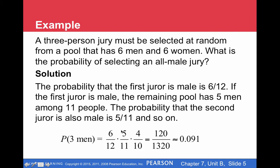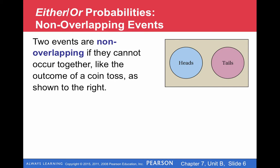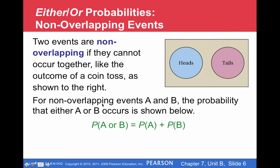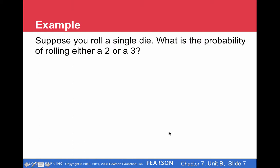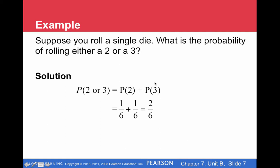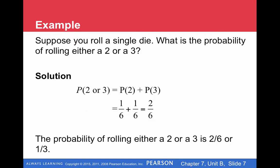Then we have either/or probabilities. With either/or, you have two possibilities: the events could be non-overlapping or they can be overlapping. Two events are non-overlapping if they cannot occur at the same time, like the outcome of a coin toss — you can't get a heads and a tails at the same time. Anytime we have non-overlapping events and we want to know the probability of either/or, we just add the probabilities. Or always means to add the probabilities. For example, if you roll a single die, the probability of rolling a two or a three — probability of two is one-sixth, probability of three is one-sixth, so we add them to get two-sixths, which reduces to one-third.